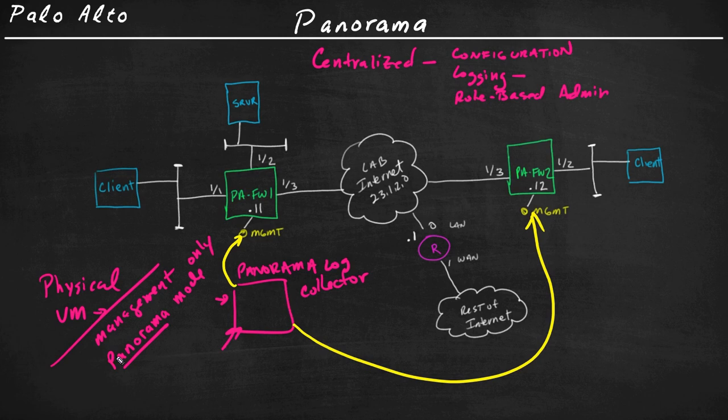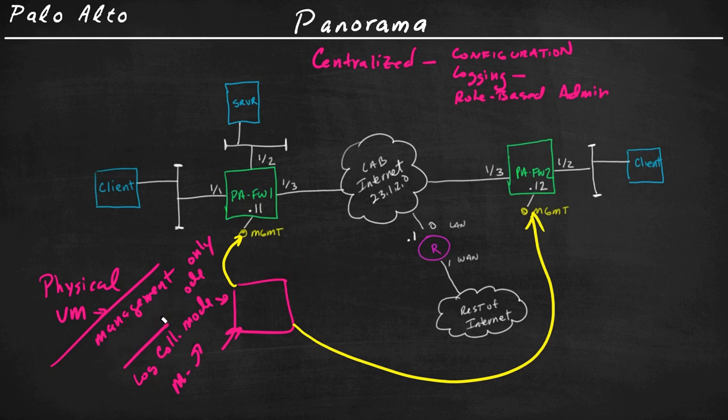So for that extra device just being used as a collector, that would be deployed as log collector mode. And the M series physical appliances can be deployed in any of these three modes: management only, panorama mode, or log collector mode. And in this specific set of videos, I'm going to be focusing on primarily the management mode, where we're using Panorama to manage our firewalls.